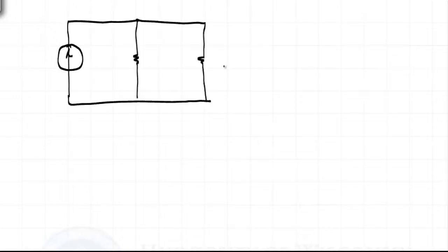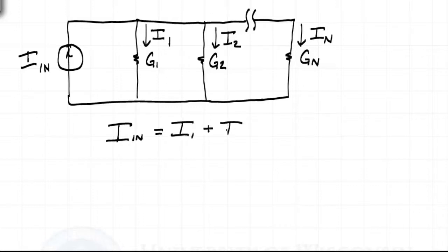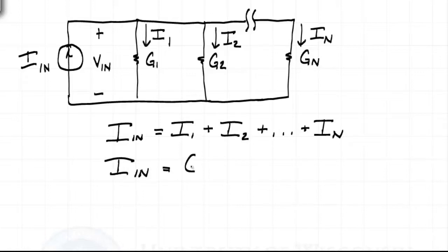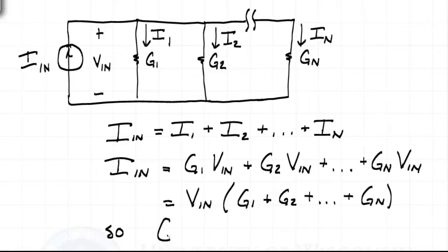We can extend this idea to an arbitrary number of conductances in parallel. Given a current IN connected to parallel conductances G1, G2, with an arbitrary number of conductances out to Gn, the same analysis applies. The supply current IN equals the sum of all currents through the parallel conductances. The circuit has only two nodes, therefore only one voltage VN. Writing each term as conductance times VN and factoring out the voltage, we end up with input current equals VN times the sum of conductances. So the equivalent conductance of parallel conductances is simply the sum of the parallel conductances.